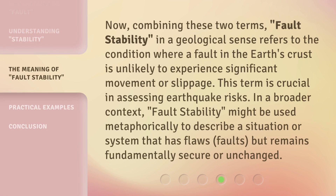Now, combining these two terms, fault stability, in a geological sense refers to the condition where a fault in the Earth's crust is unlikely to experience significant movement or slippage. This term is crucial in assessing earthquake risks. In a broader context, fault stability might be used metaphorically to describe a situation or system that has flaws or faults, but remains fundamentally secure or unchanged.